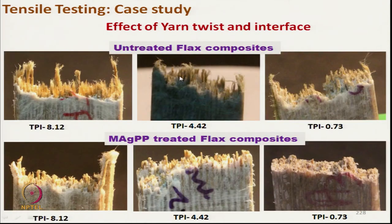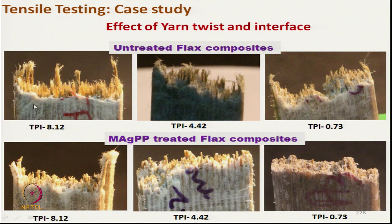Photographs of flax-polypropylene composites after tensile failure show that untreated flax composites do not exhibit straight failure, due to less bonding between the flax and polypropylene. Once the polypropylene is treated with MAPP (maleic anhydride polypropylene), bonding improves and a sharp breakage is observed. Load carrying capacity improves, and fiber slippage is visible.